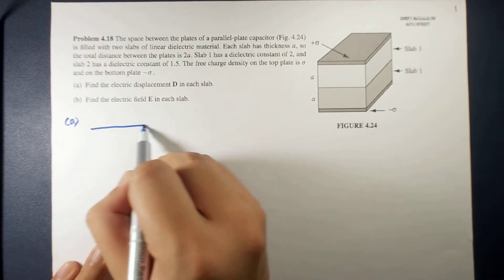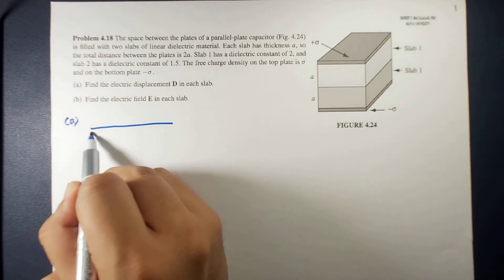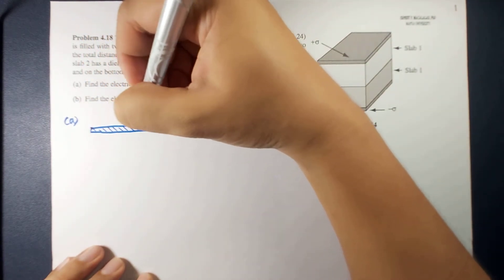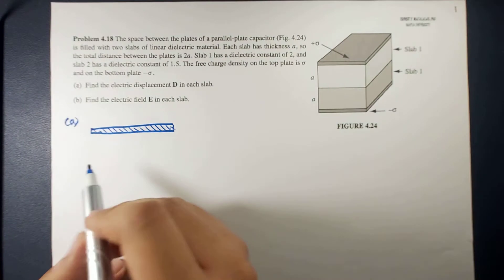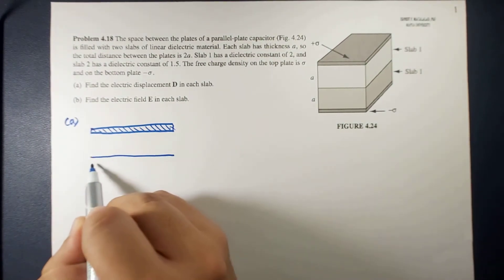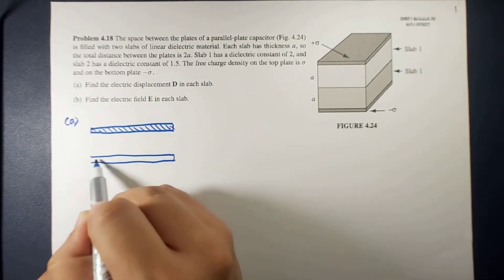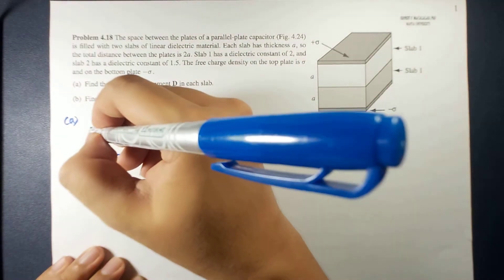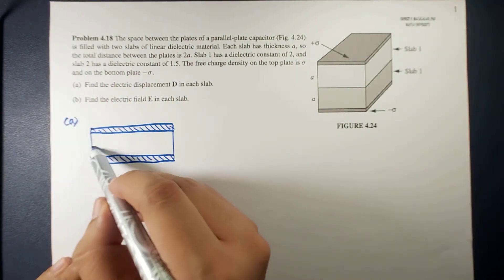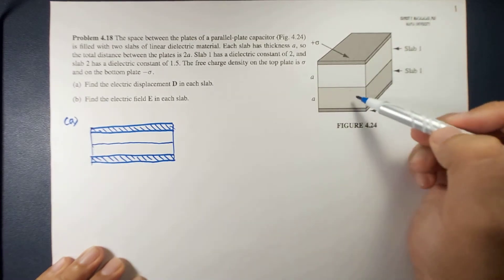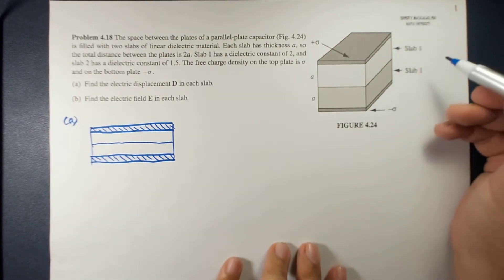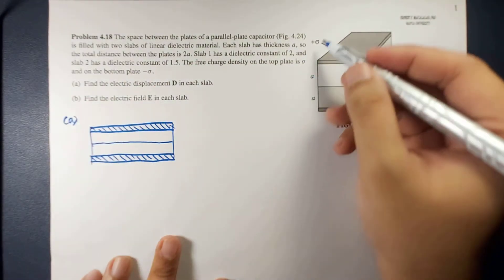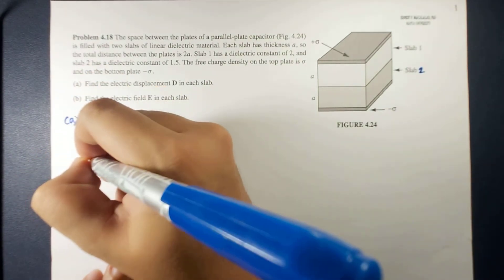Okay, so this is your top plate, and let's say this is your bottom plate. Okay, and then, in the middle, you have a boundary between the two dielectric materials. Slab 1, and it should be slab 2. As I mentioned here, top plate is plus sigma, and the bottom plate is minus sigma.